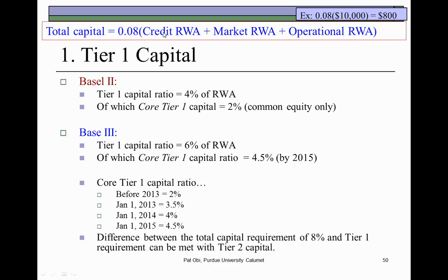Suppose the sum of these risk-weighted assets is $10,000 — and these could be in millions. 8% of that is $800, so this bank's total capital should not fall below $800. Under Basel II, the Tier I capital ratio should be no less than 4% of risk-weighted assets — in other words, one-half of this 8% should come from Tier I capital.